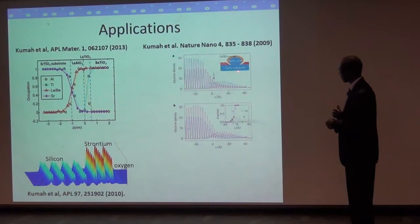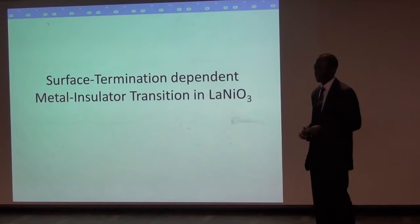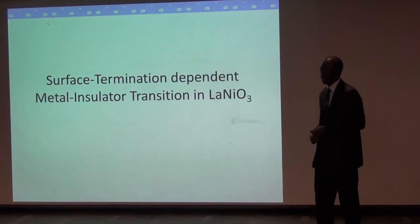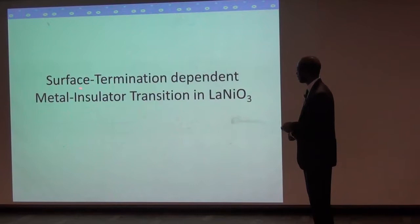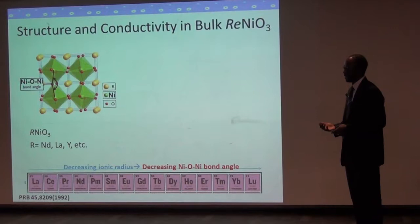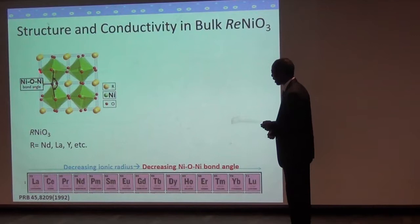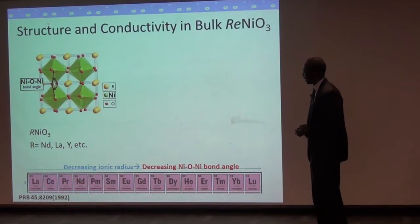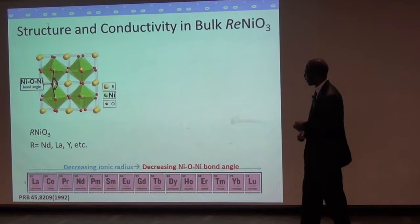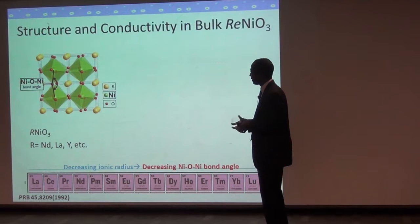Today I'm going to be talking about more recent work looking at the material called lanthanum nickelate, trying to understand how metal-insulator transitions occur in this system and their dependence on how the films are terminated. The rare earth nickelates are perovskites with the same structure I showed you at the beginning of the talk, where the rare earth ion occupies the corner of the cube, the nickel ions are in the center surrounded by oxygen, and unlike the perfect perovskite structure, the octahedra in the rare nickelates are rotated with respect to each other.